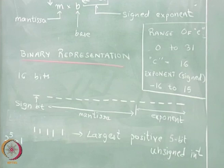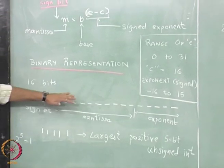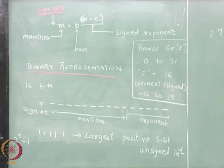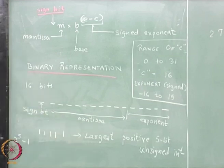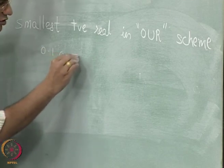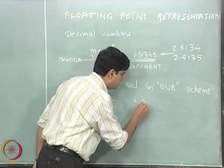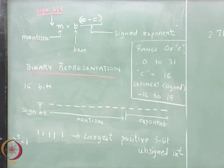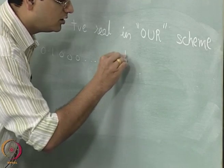In general, real numbers are going to be represented as 32-bit, or double precision numbers are going to be represented as 64-bit numbers. I will come to that later. But in this particular representation, the smallest positive real number is going to be 0.100 multiplied by 2 to the power of e minus c, that is 2 to the power minus 16.